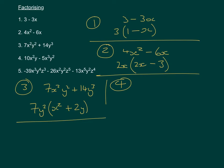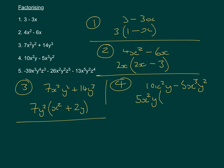Number 4 is 10x²y - 5x³y². Both terms share a number factor — the HCF of 10 and 5 is 5. Both contain x, with HCF of x² and x³ being x². Both contain y, with HCF of y and y² being y. So we take out 5x²y. Inside the bracket, we're left with 2 for the first term, and minus xy for the second, giving 5x²y(2 - xy).